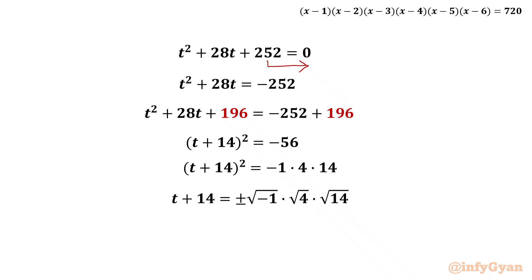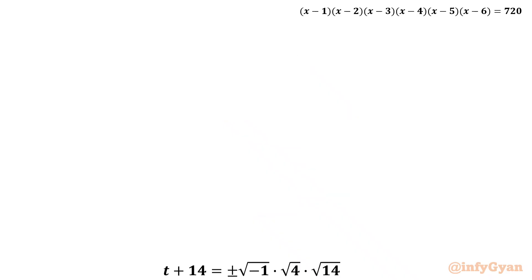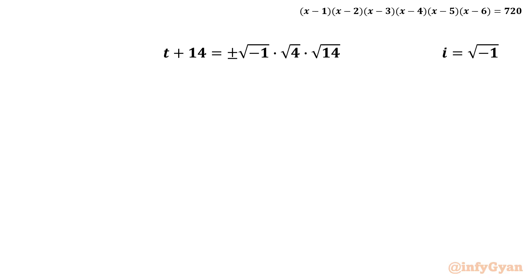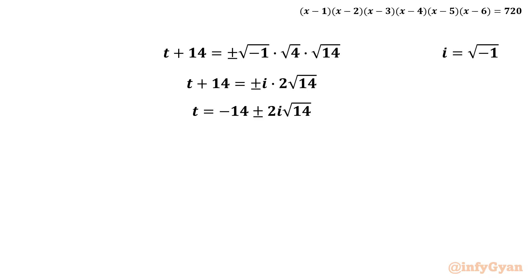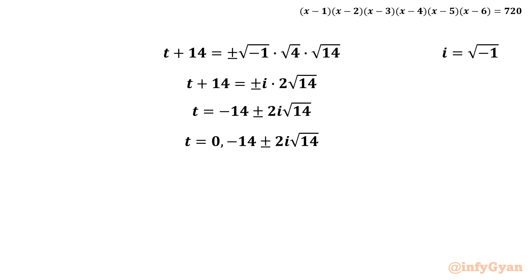Taking the square root: t + 14 = ±√(−1) × √4 × √14. Since √(−1) = i, we get t + 14 = ±2i√14. Subtracting 14 from both sides gives t = −14 ± 2i√14. In total, the three solutions of the cubic in t are: t = 0, and t = −14 ± 2i√14. One solution is real and the remaining two are complex.